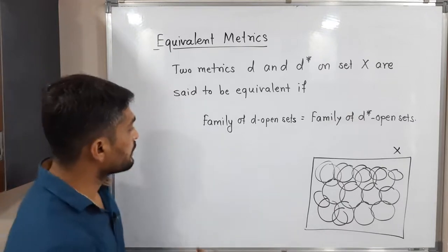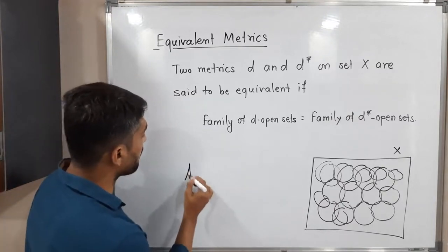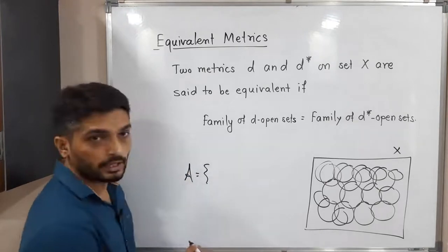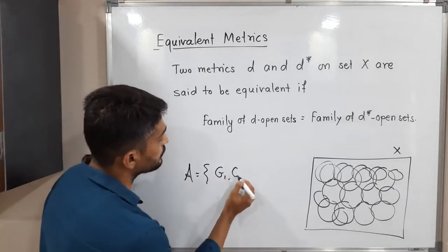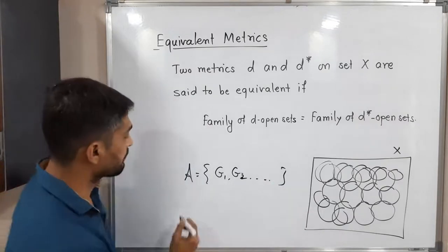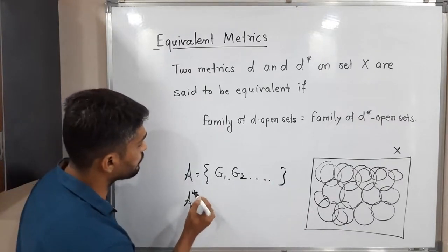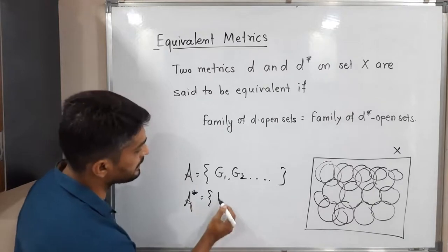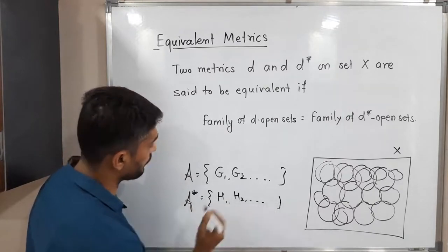So let us discuss one example. I consider a family of D-open sets: A = {G1, G2, and so on}. This is a family of D-open sets. And A*, which is a family of D*-open sets: {H1, H2, and so on}.